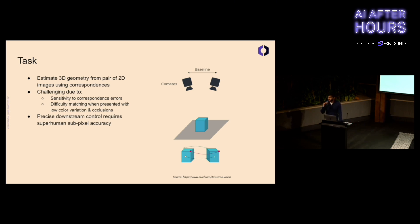This is challenging for a couple of reasons. There's high sensitivity to correspondence errors. Small pixel errors can correspond to larger errors in the real world in 3D. It's also difficult when we have low color variation and occlusions. For example, if this cube was really all blue, it would be hard to match different areas of it. Also, if we can't see part of the cube, how do we match it? And finally, precise downstream control of the robot requires superhuman sub-pixel accuracy. We're matching below the pixel level.